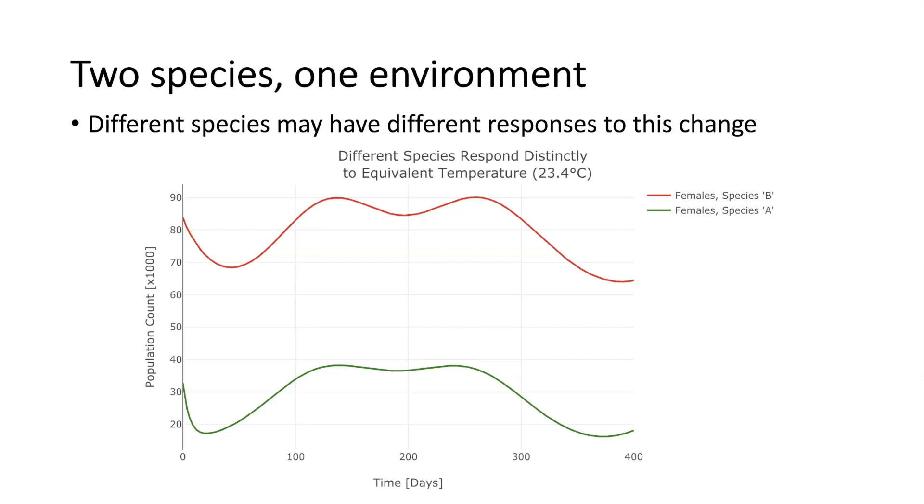The qualitative observation that we can make here is that species B in red is able to sustain higher population levels at this particular temperature. The dynamics, the shape of the curves for both species are both bimodal, but the red species B displays that bimodality more prominently, and does not feature the same rate of increase or decrease at either end of the time period pictured.